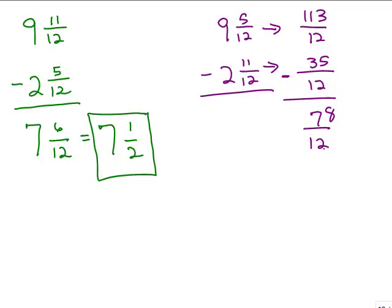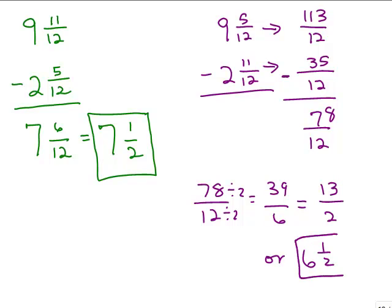And then we need to reduce that. All right, so let's take 78 twelfths. So you might not know what number goes into the biggest number that goes into there. But you could certainly see they're both even. So we could divide each of them by 2 to begin with. That's 39, 6. And then actually 3 goes into both of these numbers. So you could divide again. 39 divided by 3 is 13. And 6 divided by 3 is 2. So that's 13 halves or 6 and a half if you change it to a mixed number.